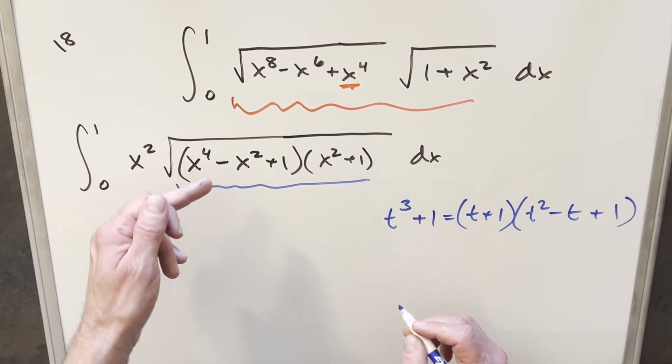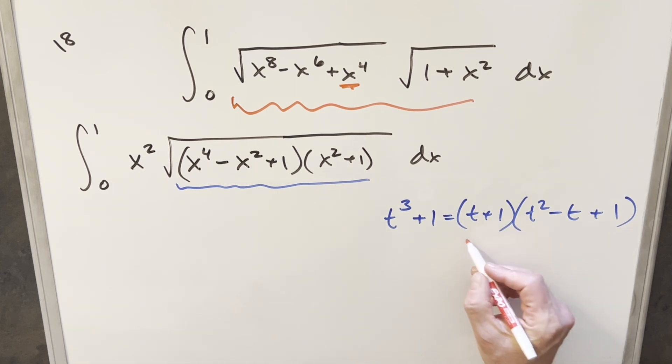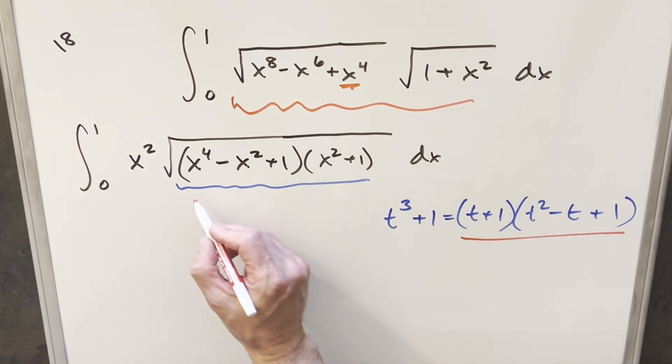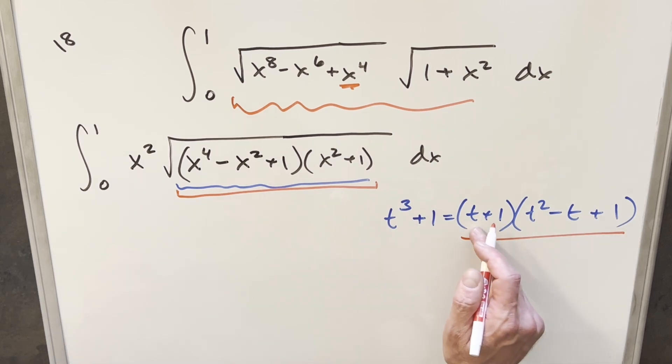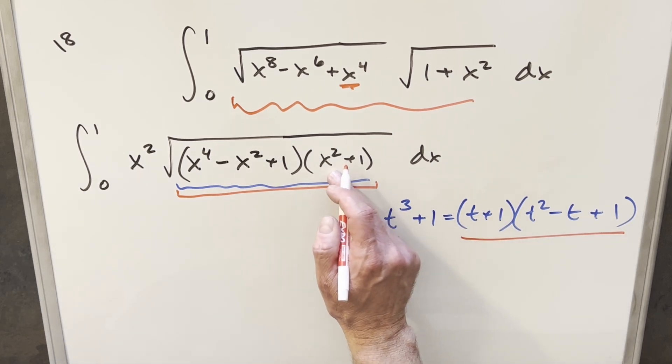And what I'm thinking is this right here, all this stuff looks a whole lot like what we have right here. It looks like really the same thing. The only difference is we have t instead of x squared here.